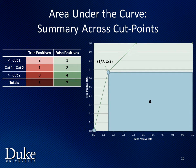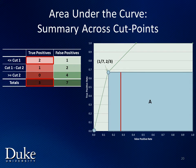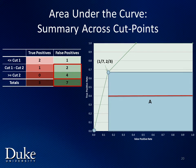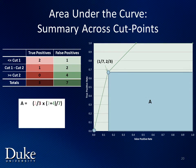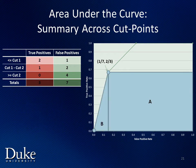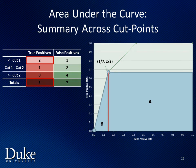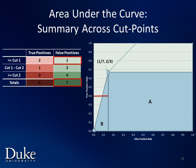To calculate the area under the curve, we'll start by calculating the area of rectangle A. Remember that for rectangles, the area is equal to its height times width. In this case, the height is our true positive rate for cut point 1, or 2/3, and the width is 1 minus the false positive rate for cut point 1, or 6/7. Next we're going to calculate the area of triangle B. The area of a triangle is equal to 1/2 its base times height. The height of triangle B is the same as for rectangle A, that is 2/3, and the base is the number of false positives for cut point 1, or 1/7.